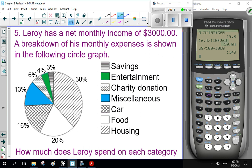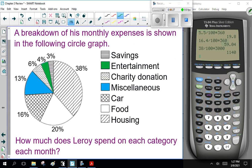Question 5. Leroy has a net monthly income of $3,000. A breakdown of his monthly expenses is shown in the following circle graph. Savings 3%, entertainment 4%, charity donations 6% and so on. Now, the question is, how much does Leroy spend in each category each month?